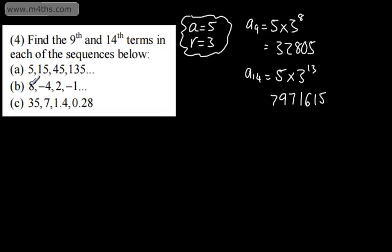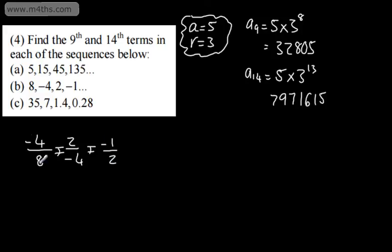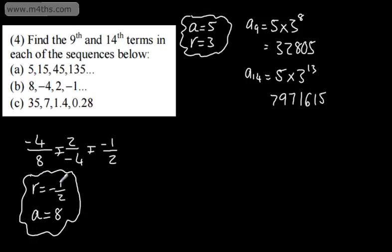Let's now do part B. We can see that the ratio, by doing the back division method we looked at, would give us negative 1 over 2. So the ratio is going to be equal to negative 1 half, and we've got a first term A equal to 8. If you didn't see the video prior to this, please check that out as we looked at finding the common ratio by back dividing, or doing A2 over A1 equals A3 over A2 equals A4 over A3.